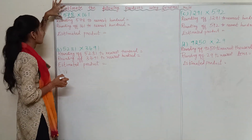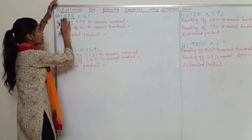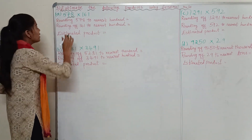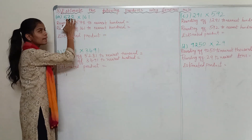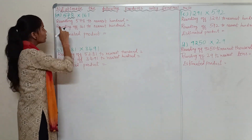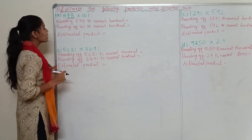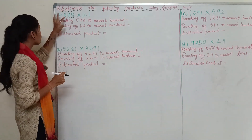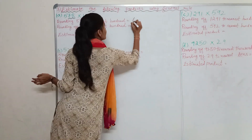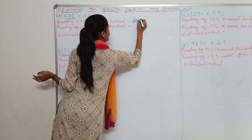Since we are rounding off to the nearest hundred, look at the tens place. The number is greater than 5 — that is 7. Since 7 is greater than 5, we will round off 578 to 600.